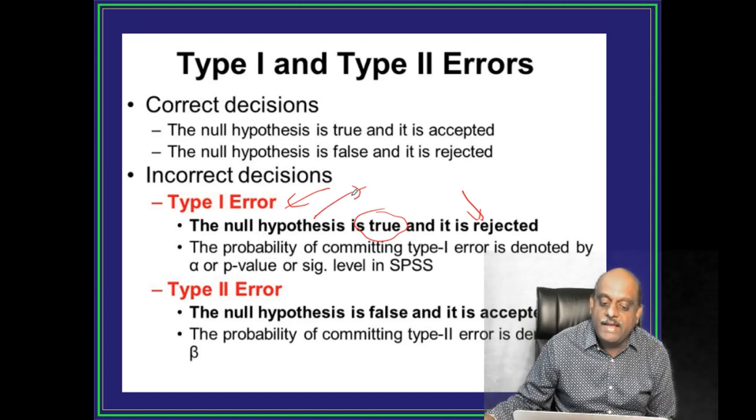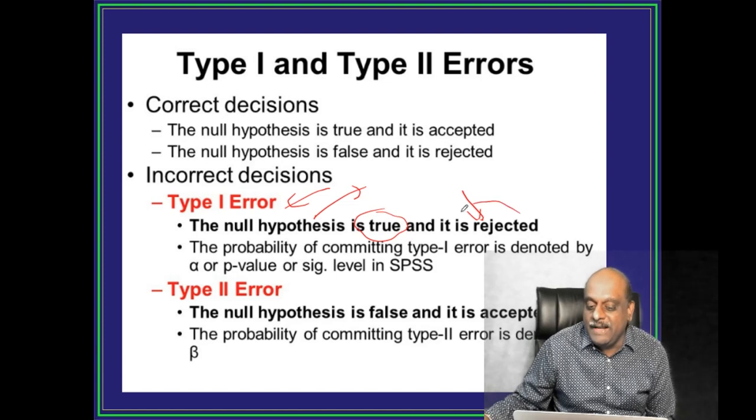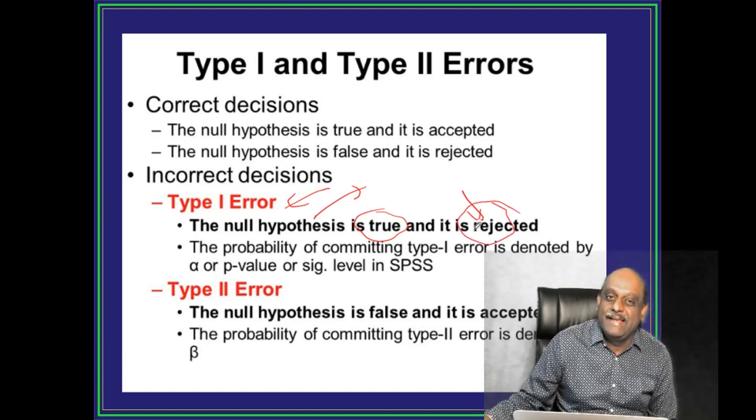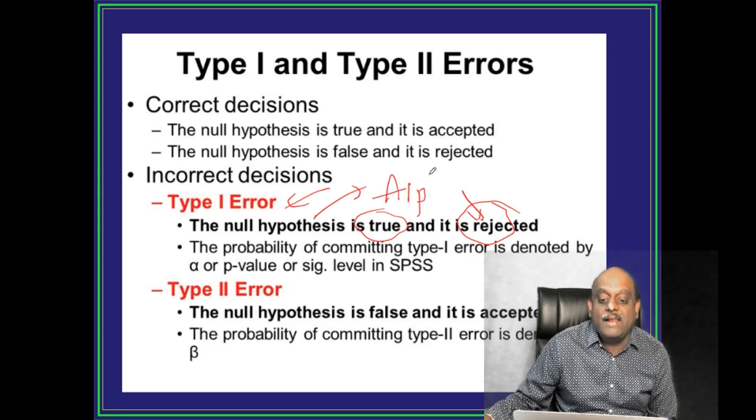Null Hypothesis says Sita Mata Sadwi hai, magar Ram ne reject kiya aur Sita ko agni parikshah kera ya, is liye it is alpha error.